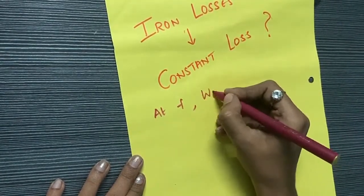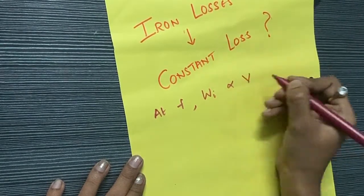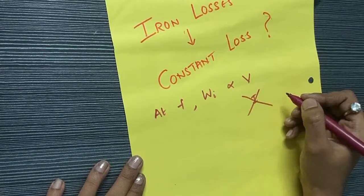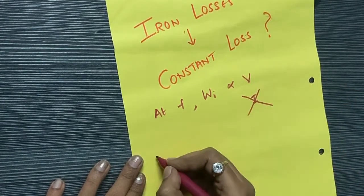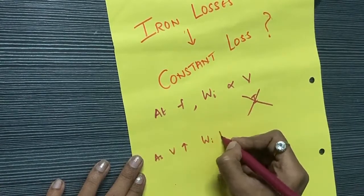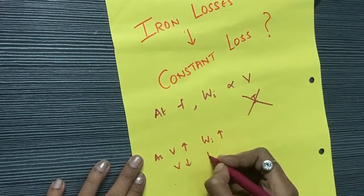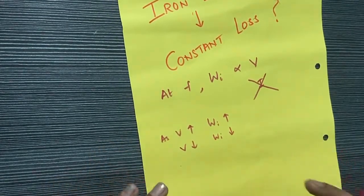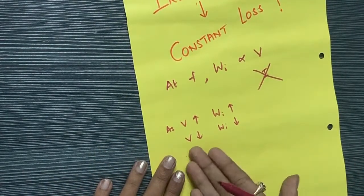are always dependent on voltage but not current. Yes, as voltage increases, iron losses increase. If voltage decreases, the iron losses decrease. But why is it not changing? Because we know